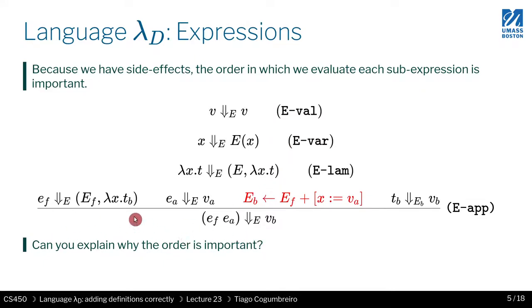So finally, when we get to this rule, which is the important rule, what this is saying is we're going to evaluate E of f with the environment E, the one given in input. And that is going to return a new environment, E of f. And what we're going to do is we're going to evaluate the argument. And finally, we have this rule here. What does this rule mean?